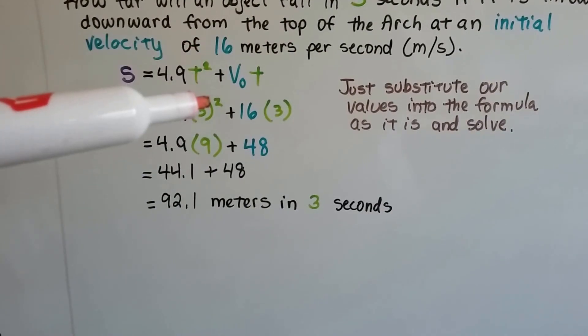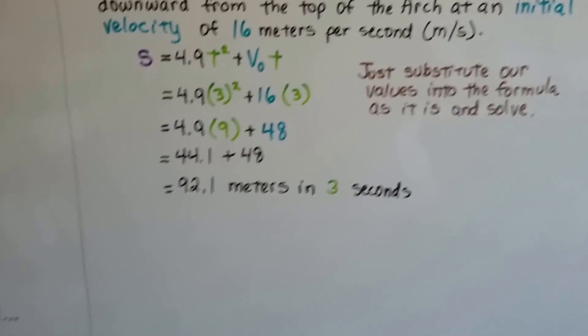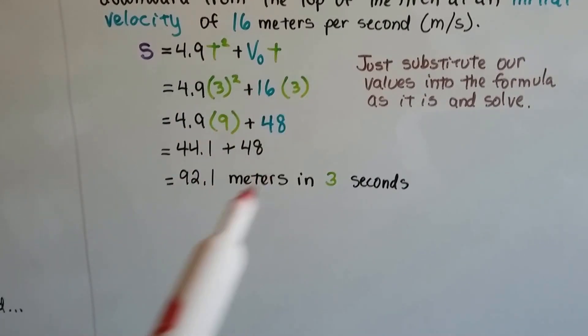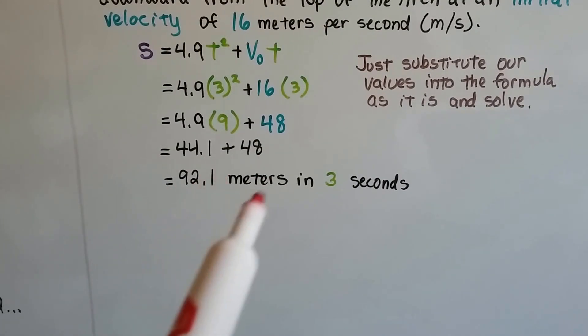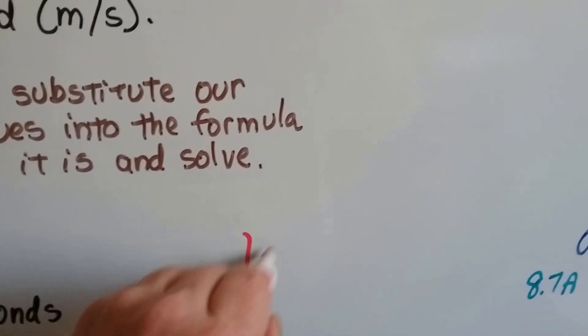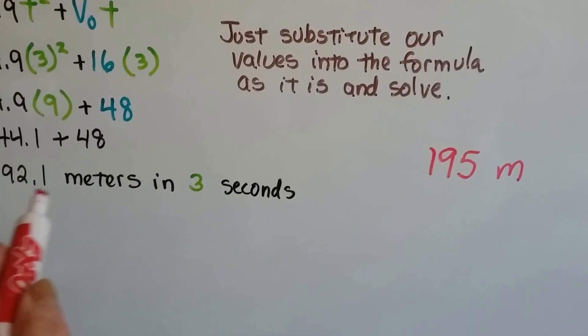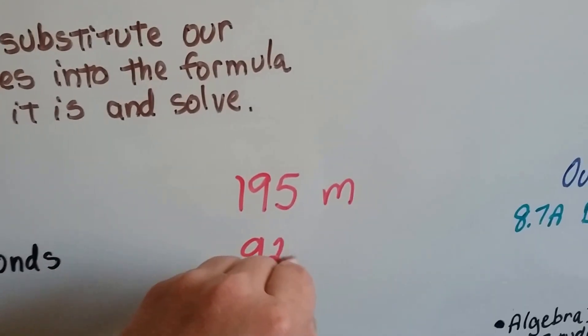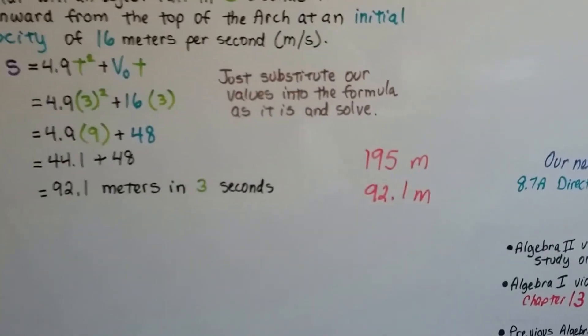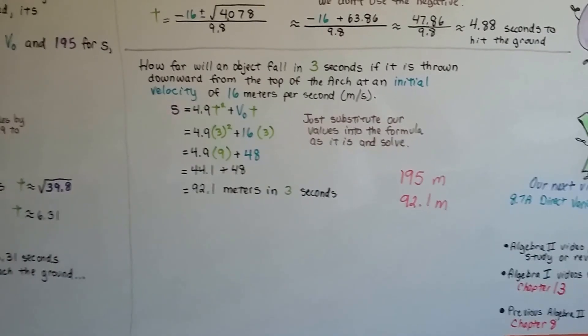If t is a 3, then we've got 3 squared. If v sub 0 is a 16, we've got 16 times 3. We do our math. We get 44.1 plus 48 and we get 92.1 meters in 3 seconds. So if the arch is 195 meters high and it went 92.1 meters, then it almost went halfway down. We know it went 92.1 meters in the 3 seconds.